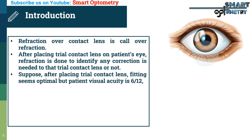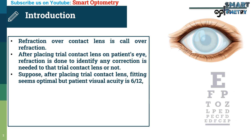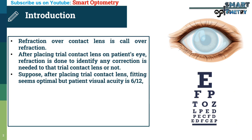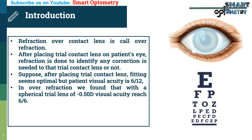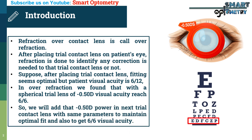Suppose after placing a trial contact lens, fitting seems optimal but patient's visual acuity is 6/12. In over-refraction, we found that with a spherical trial lens of -0.5 diopter, visual acuity reaches 6/6. So we will add that -0.5 diopter power in the next trial contact lens with the same parameters to maintain optimal fit and also to achieve 6/6 visual acuity.